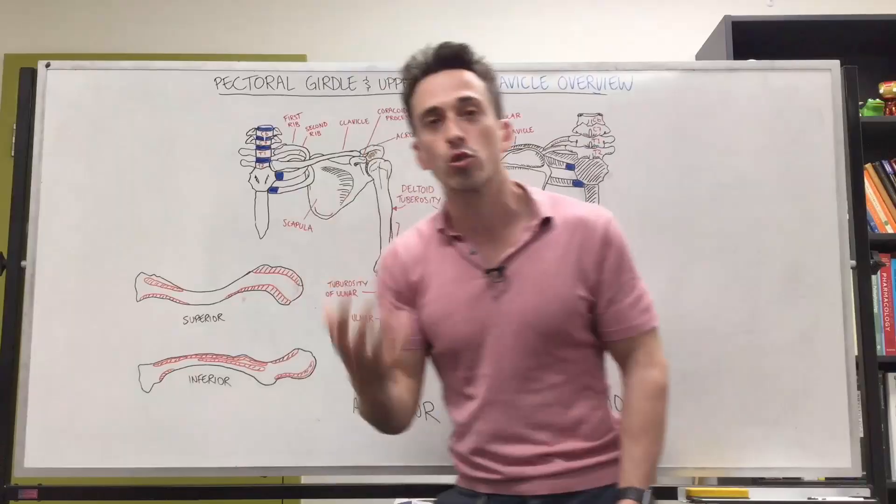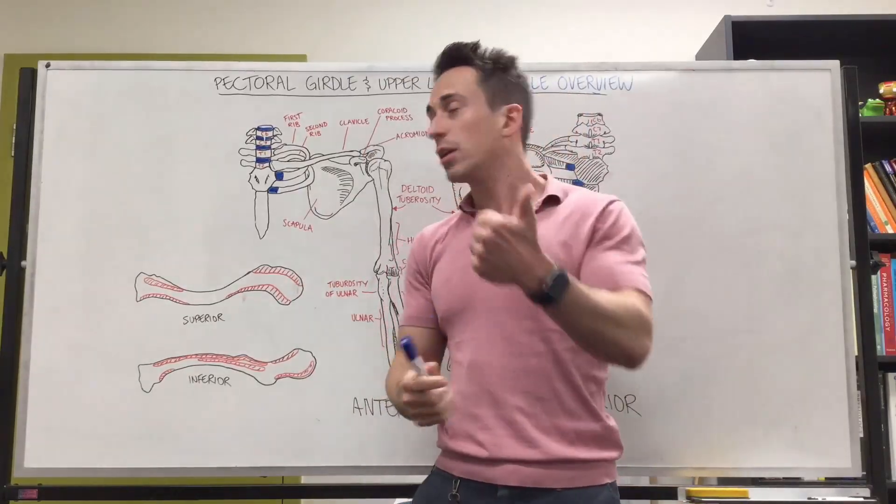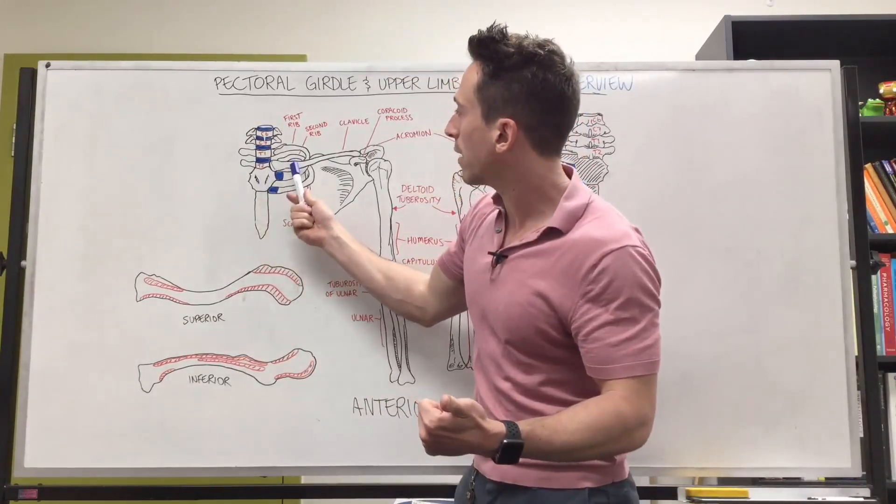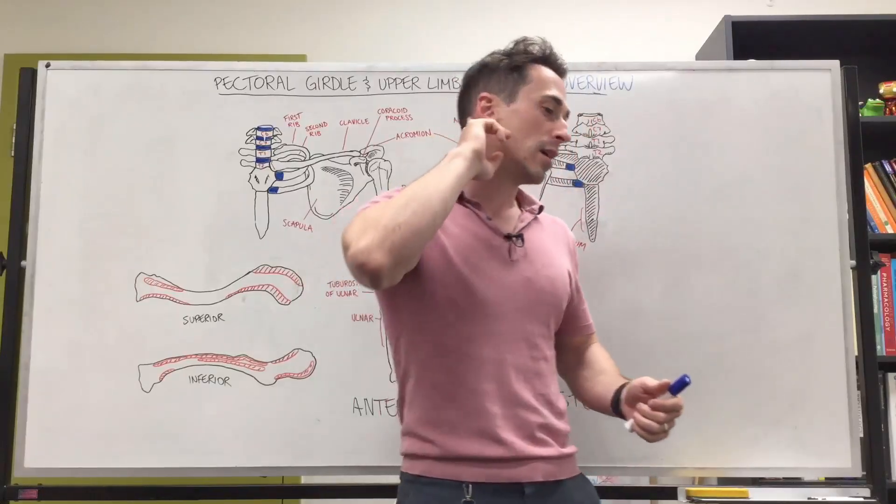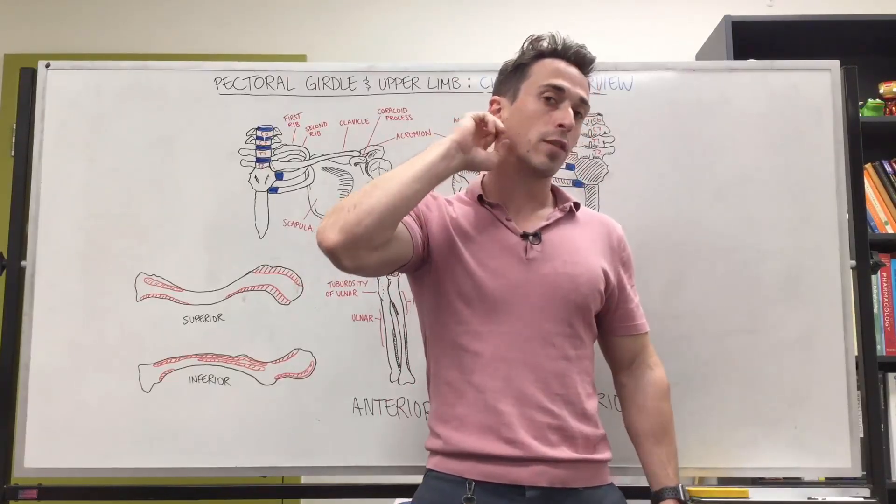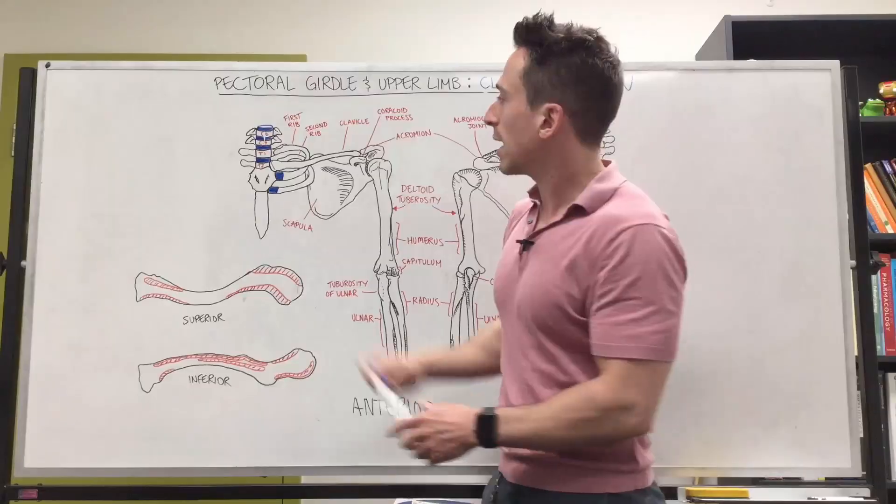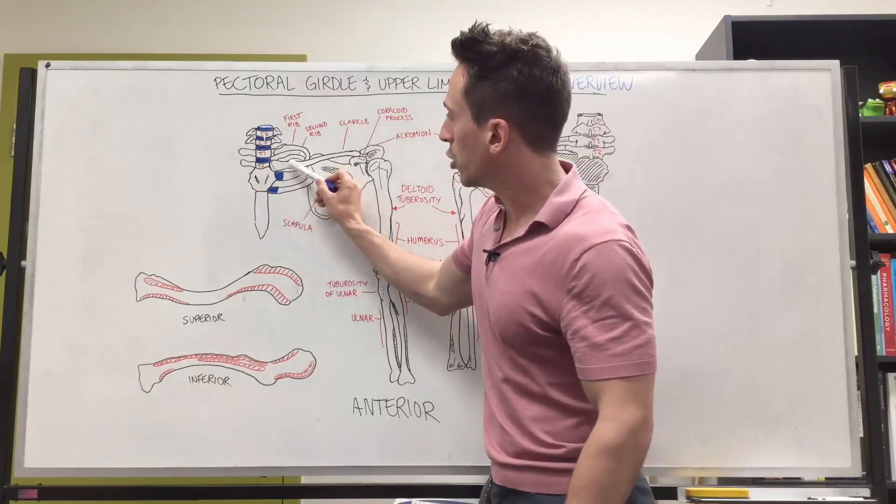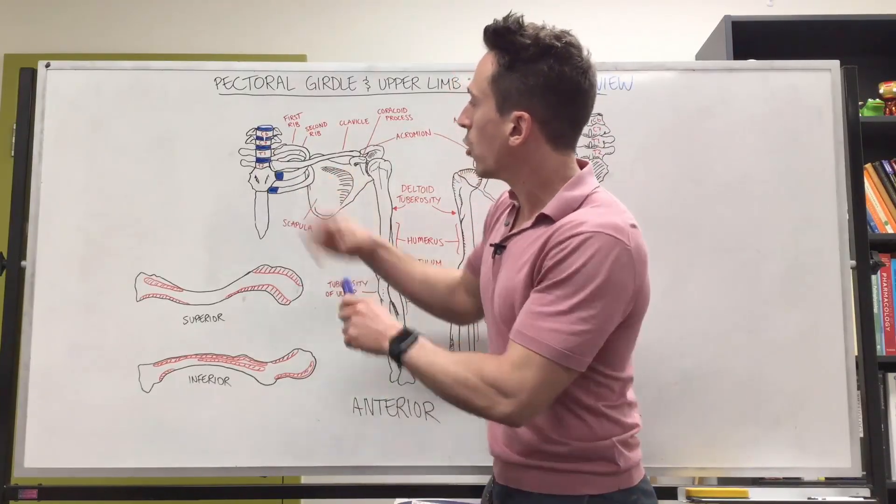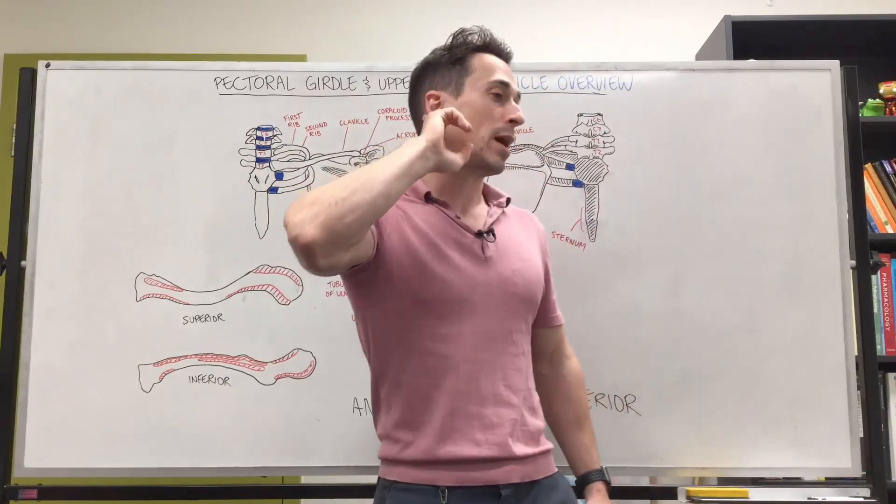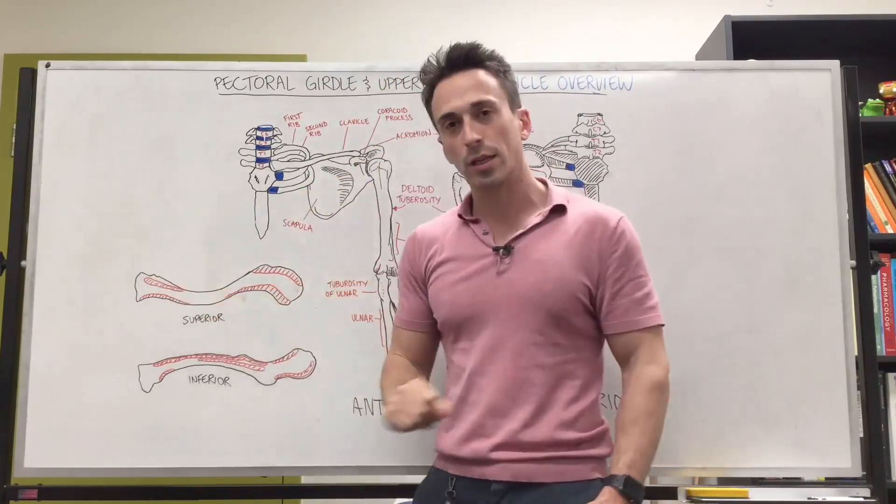Now the sternocleidomastoid is a strap-like muscle, sterno meaning sternum, cleido meaning clavicle, mastoid, talking about the mastoid process of the temporal bone. So that means that at the sternum and the clavicle, you've got this muscle originating where it inserts up to the mandible, and this is that site there on the clavicle.